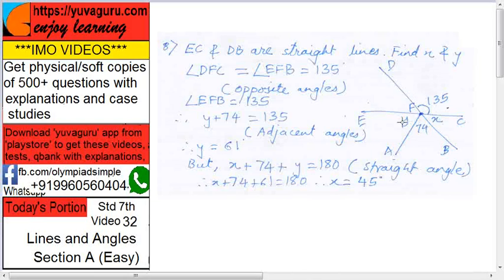So X and Y, how to find? DFC equals to EFB. DFC equals to EFB by DC, this DB and EC intersect. So these two angles are vertically opposite angles.